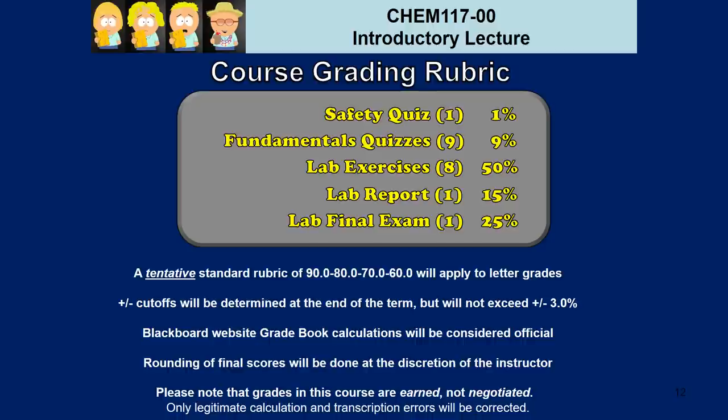Once your final weighted score has been calculated, it will be applied to a rubric to determine your letter grade. A tentative standard rubric of 90.0, 80.0, 70.0, and 60.0 will apply to the cutoffs among A, B, C, and D letter grades. There will be plus/minus cutoffs determined at the end of the term based upon the course score histogram, but they will not exceed plus or minus 3.0 percentage points. If you absolutely must walk out of the final exam knowing you have an A, you'll need at least a 93.0% for that to be a certainty.